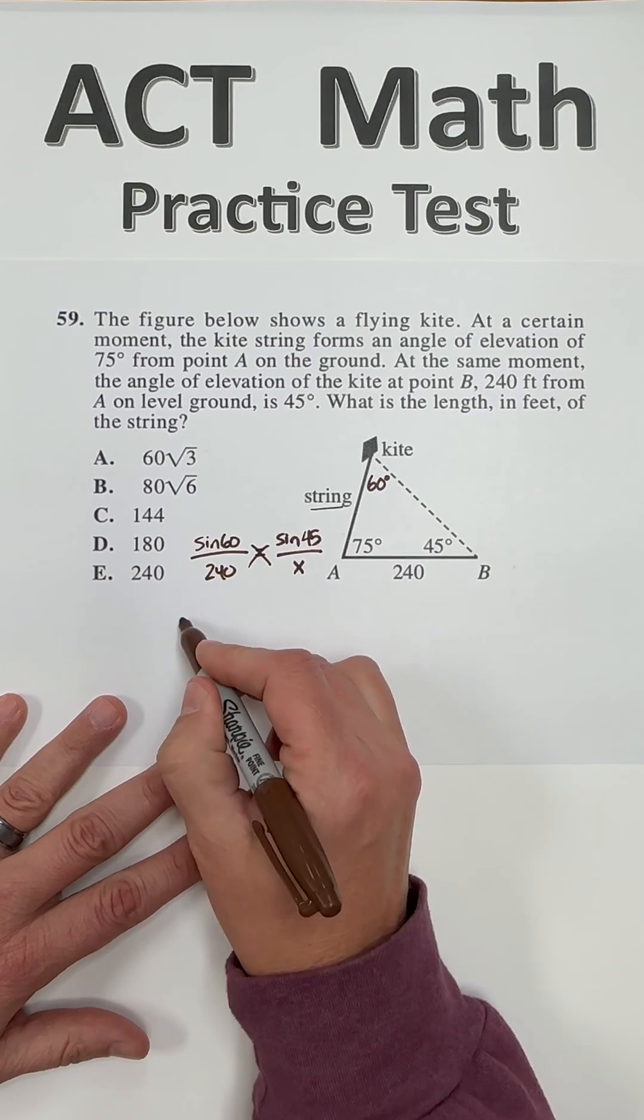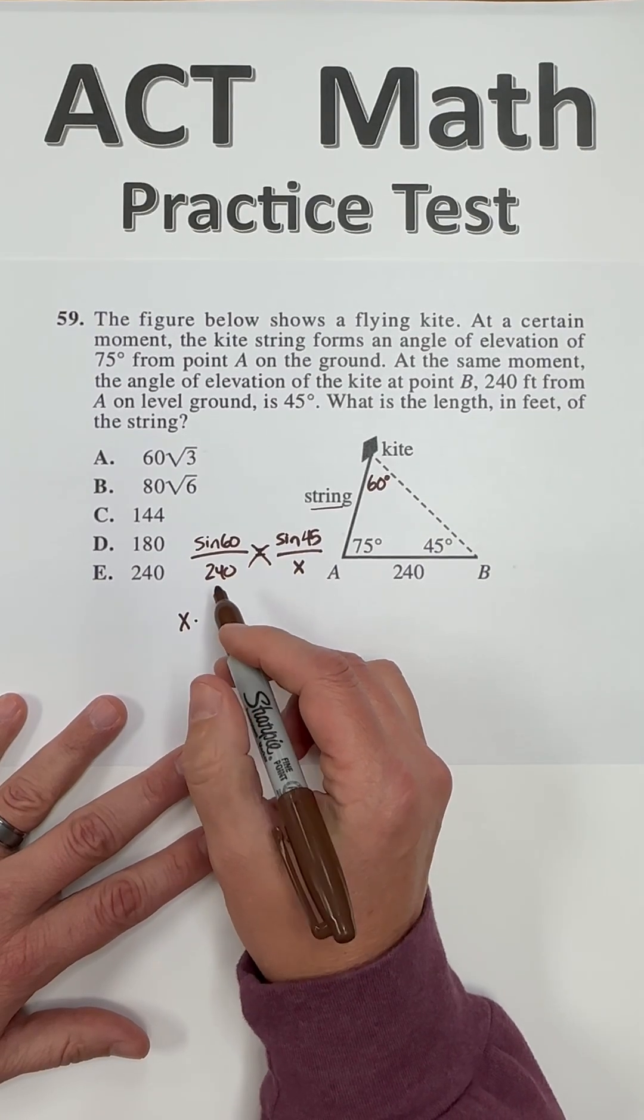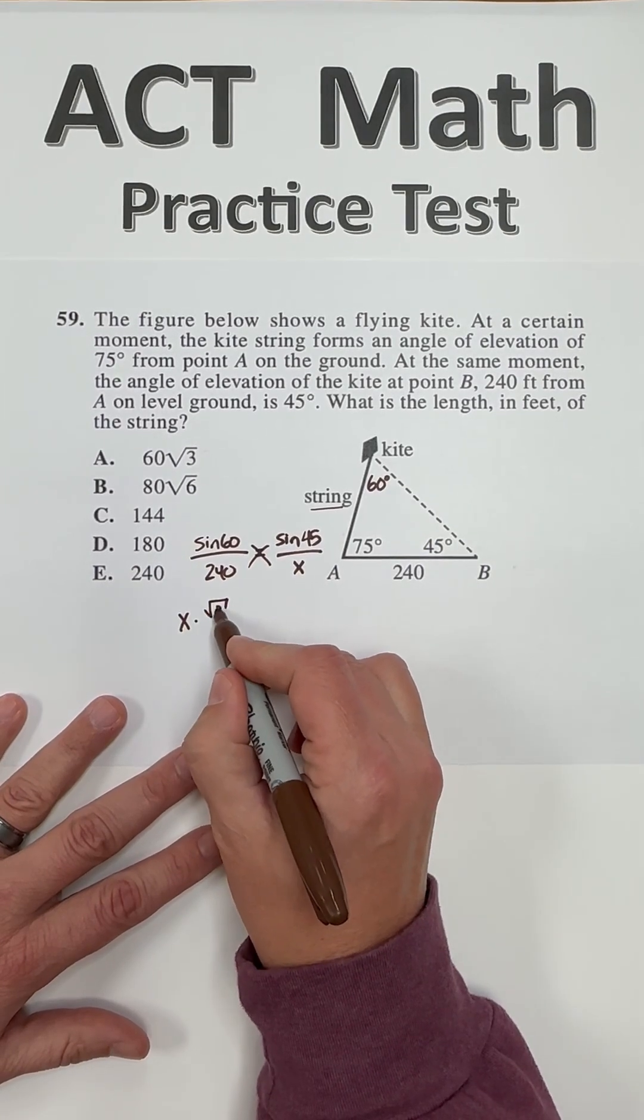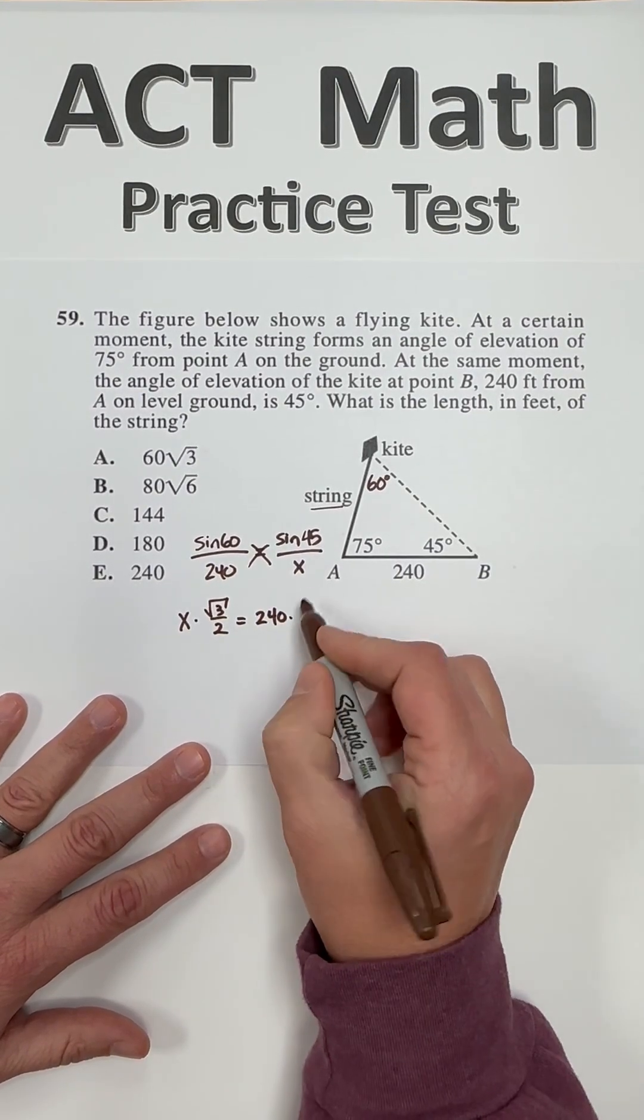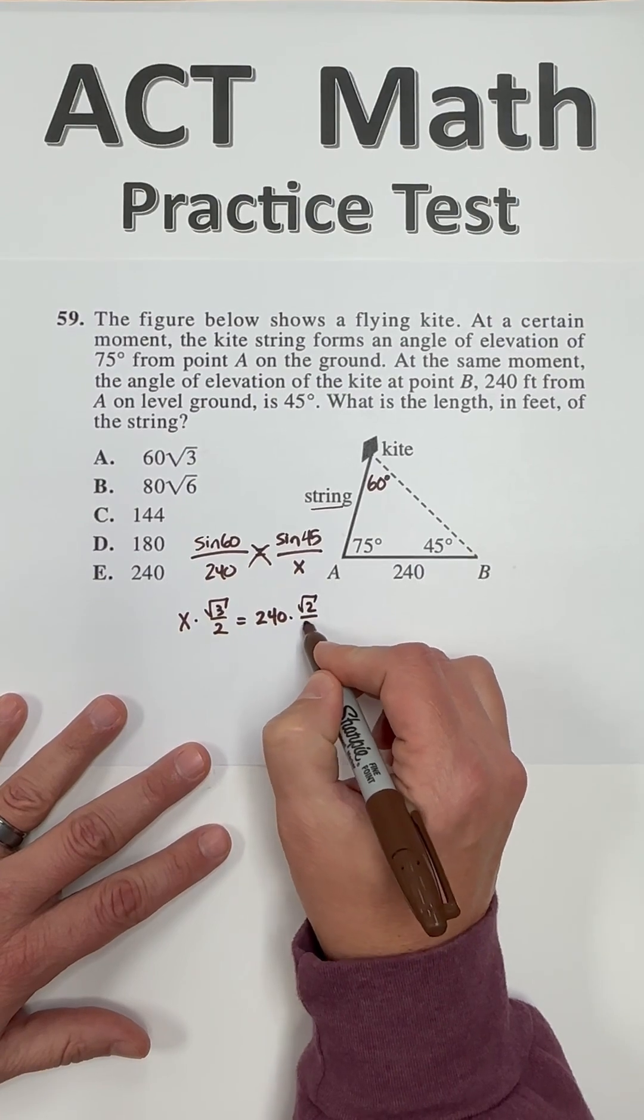So cross product, I have x times the sine of 60. If you know sine of 60 is square root 3 over 2, that's great. Equals 240 times the sine of 45, which is square root 2 over 2.